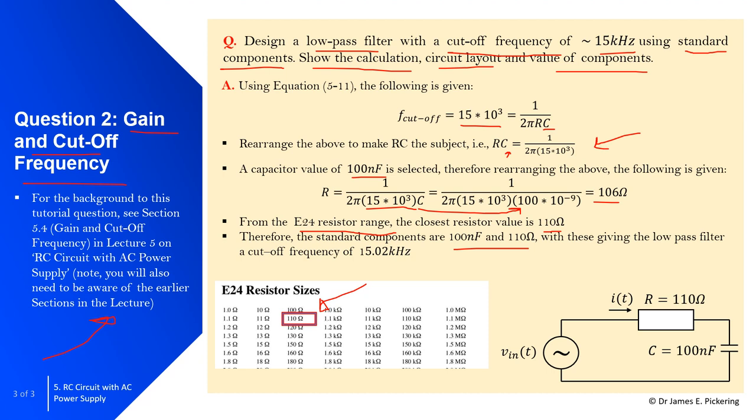If I take those values and substitute them into the original equation, I get a cutoff frequency of 15.0 kHz, which is very close to the desired value of approximately 15 kHz. You can see the configuration here: resistor value of 110 ohms and capacitor value of 100 nanofarads.